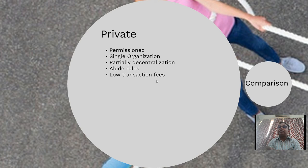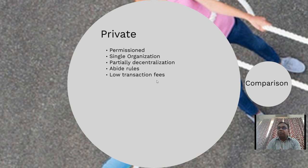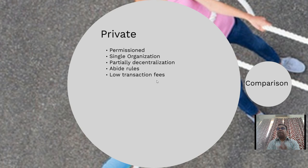There are certain rules about who can read and who can write. Transaction fees are lower because it is a smaller network with fewer participants, and fewer consensus mechanism algorithm approvals are required. Because only an enterprise is using it, it is known as an enterprise blockchain. The example of a private blockchain is Hyperledger, and examples of public blockchain are Bitcoin and Ethereum.